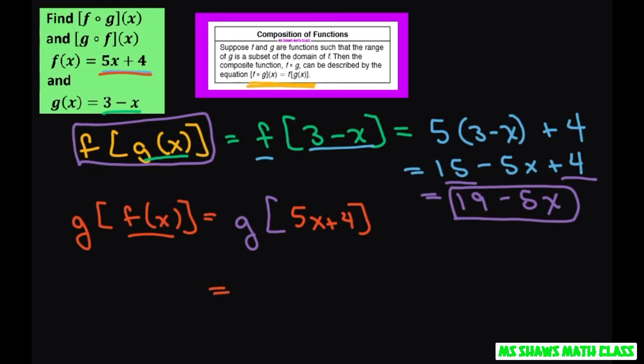Now our g is 3 - x. So it's going to be 3 minus x. Sorry, minus x. And our x is 5x + 4.